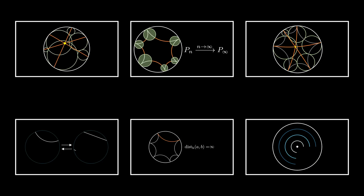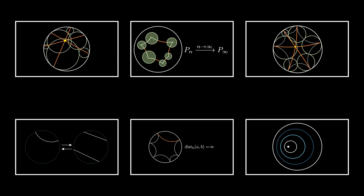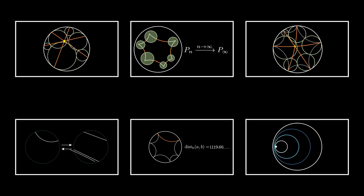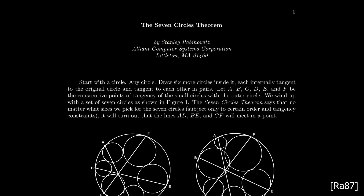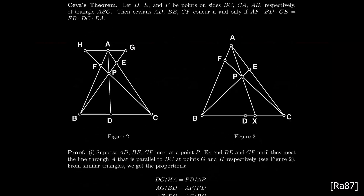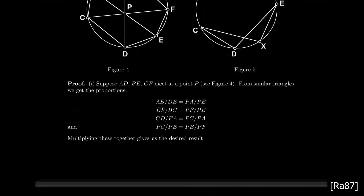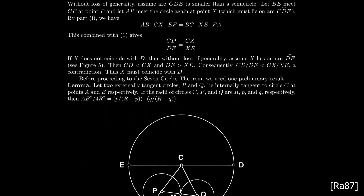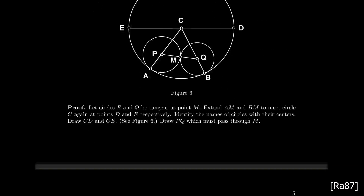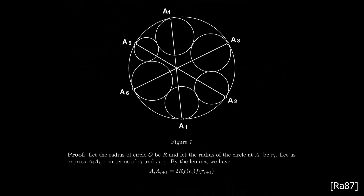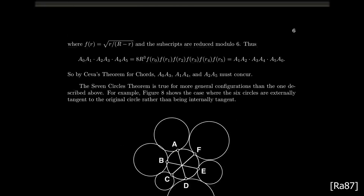Mind you, this is not the only way to prove our theorem. The first proofs of the seven circles theorem in the 1970s did not wander through the lens of hyperbolic geometry, but used mainly Euclidean methods.